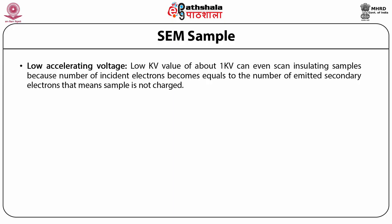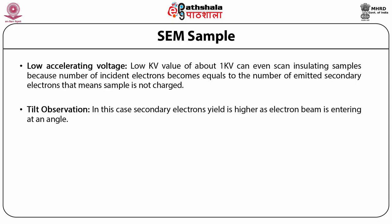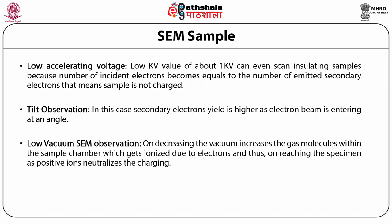Next is tilt observation. In this case, secondary electron yield is higher as the electron beam is entering at an angle. Next is low vacuum SEM observation. On decreasing the vacuum, it increases the gas molecules within the sample chamber, which get ionized due to electrons. Thus, on reaching the specimen as positive ions, they neutralize the charging.